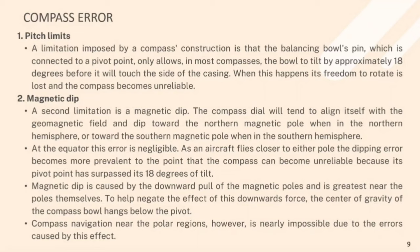Magnetic dip: A second limitation is magnetic dip. The compass dial will tend to align itself within the geomagnetic field and dip toward the northern magnetic pole when in the northern hemisphere, or towards the southern magnetic pole when in the southern hemisphere. At the equator, this error is negligible. As an aircraft flies closer to either pole, the dipping error becomes more prevalent to the point that the compass can become unreliable because its pivot point has surpassed its 18 degrees of tilt. Magnetic dip is caused by the downward pull of the magnetic pole and is greatest near the poles themselves.